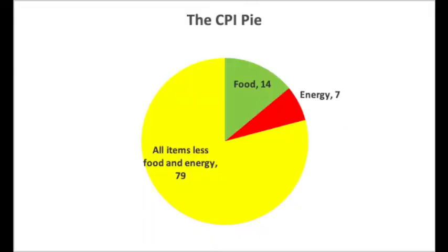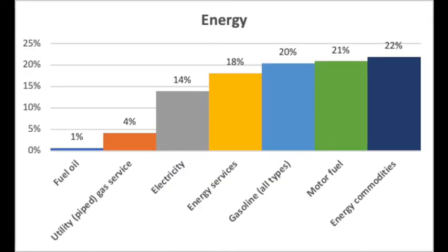This is what I call the CPI pie — the components of the Consumer Price Index. Starting from energy, you can see that accounts for 7% of the official inflation statistic in the States. Food counts for roughly 14% — it's actually 13.96% for food. The big bucket is all items without food and energy factored in, and that's some 79%.